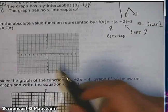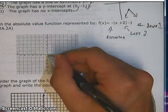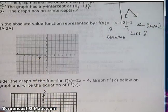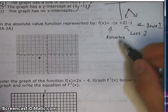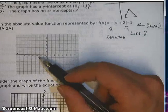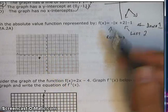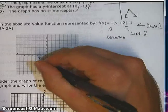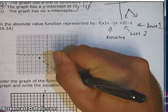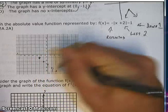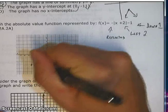So when I graph this thing, I'm going to start at 0, 0, go left 2, down 1. And it's been reflected, so instead of going up 1 over 1, I'm going to go down 1 over 1 in both directions.